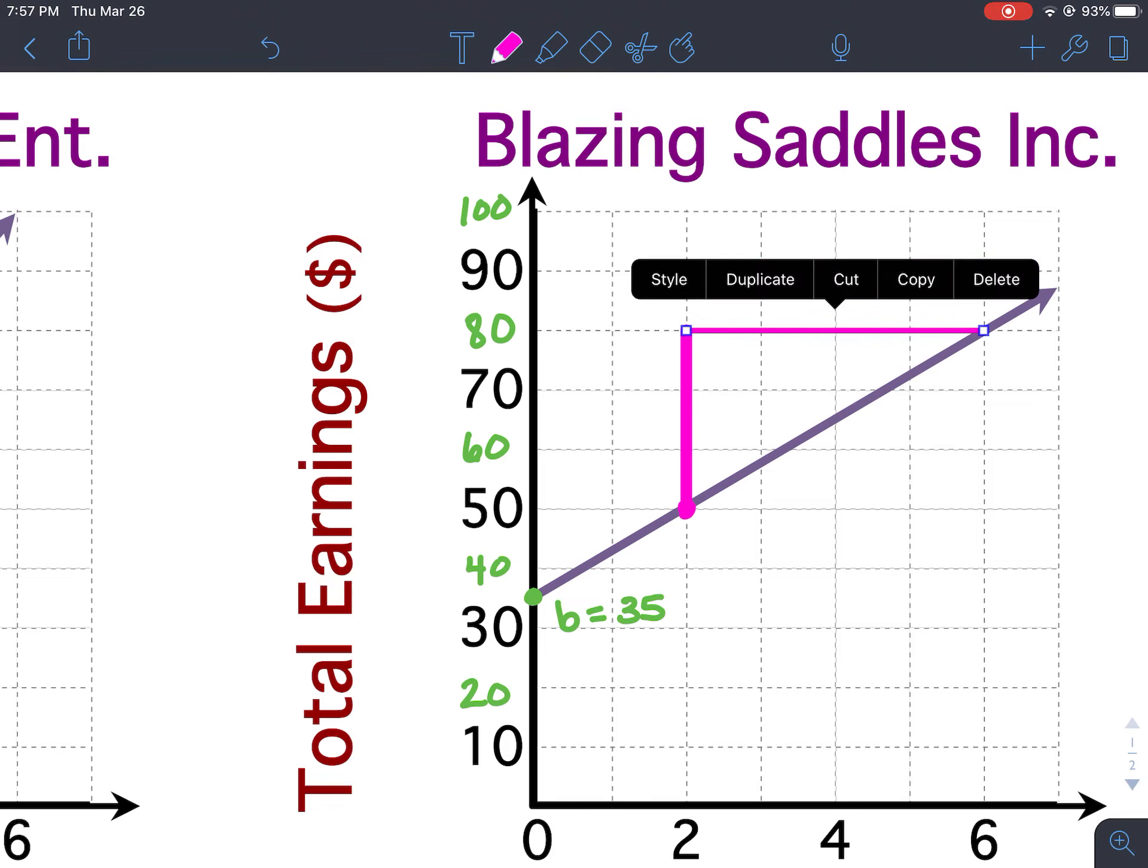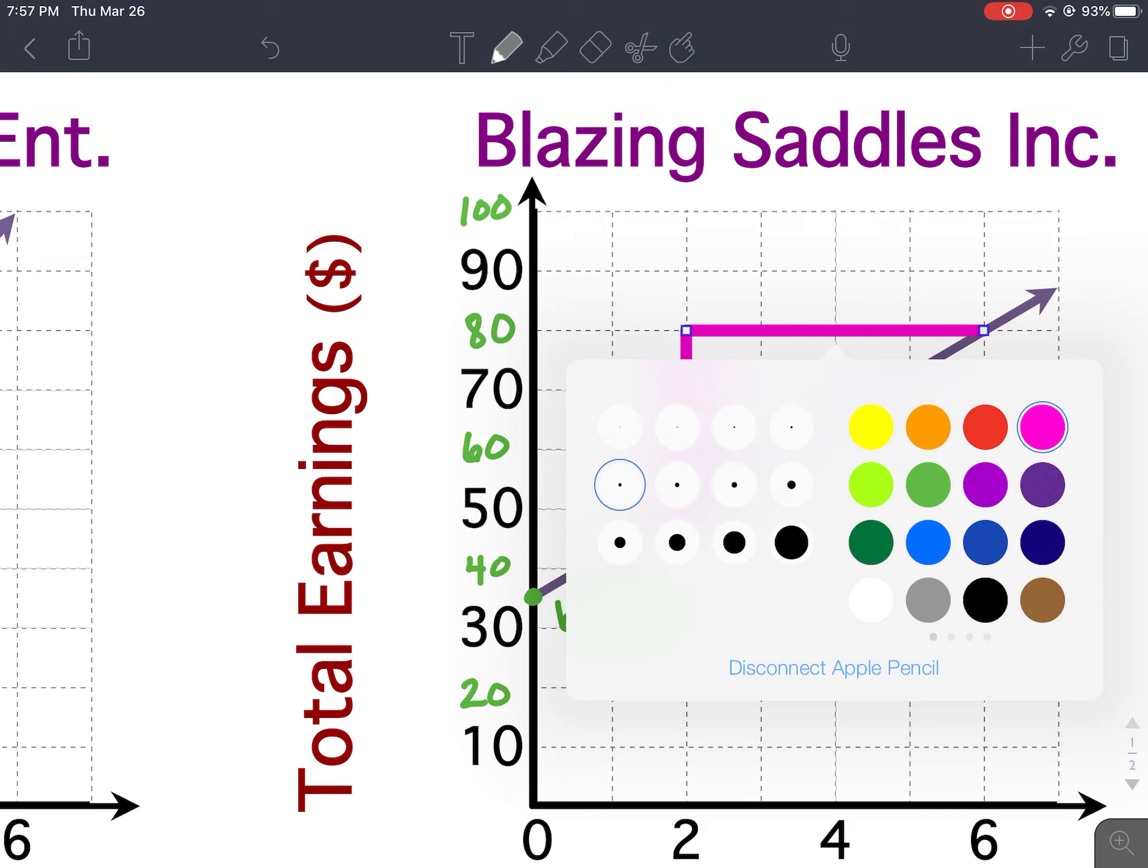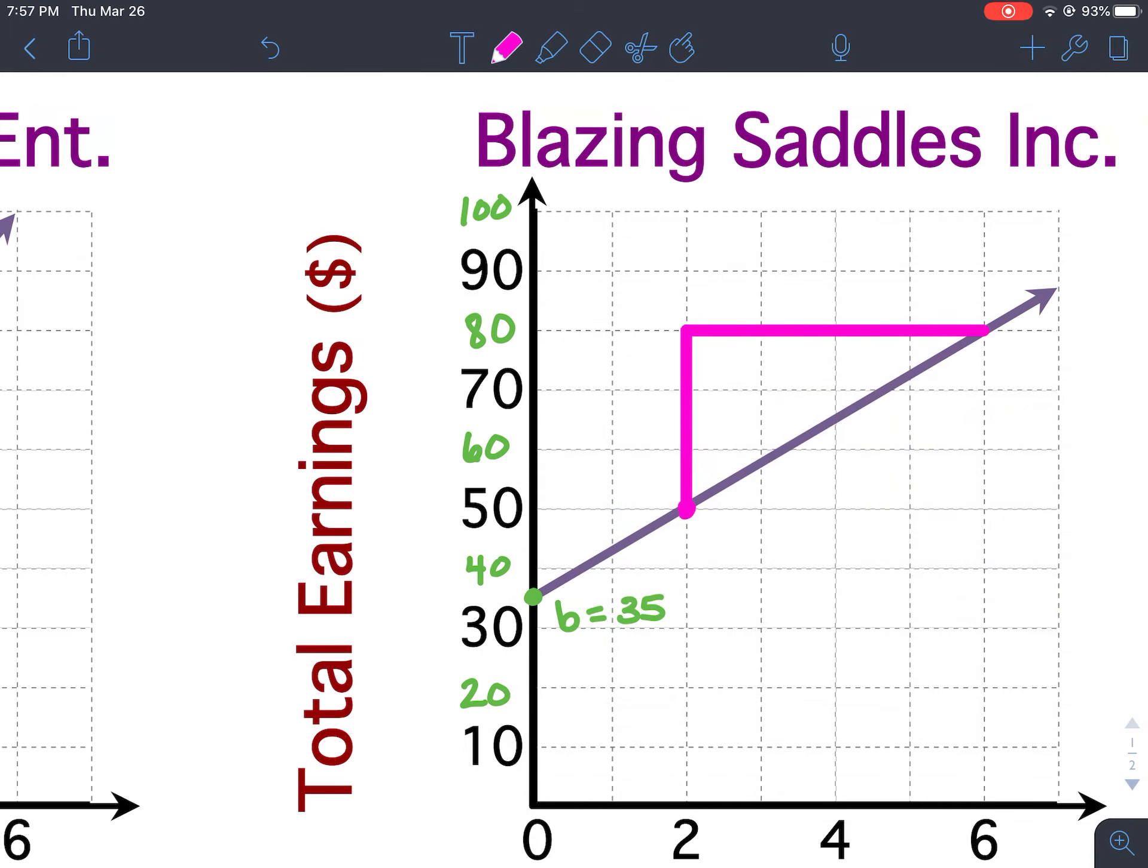Remember, you go on the graph from left to right, so you go up or down first, and then to the right. Okay, so our rise goes from 50 to 80. This is not 3. That would not be if you counted the grid lines.